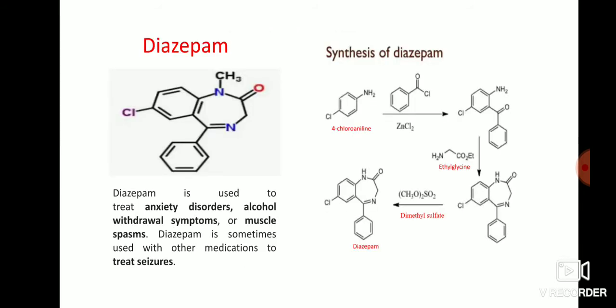Coming to the structural and synthetic drugs. Diazepam is mainly used to treat anxiety disorders, alcohol withdrawal symptoms, or muscle spasms, and sometimes used to treat seizures. For synthesis of diazepam: 4-chloroaniline interacts with benzoyl chloride in the presence of zinc chloride to form an intermediate compound. This intermediate compound is then treated with ethyl glycine to form diazepam, followed by purification using dimethyl sulfate to obtain pure diazepam.